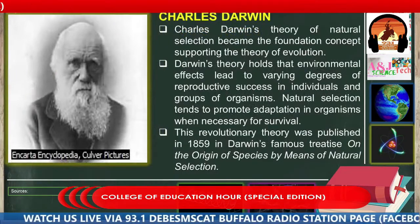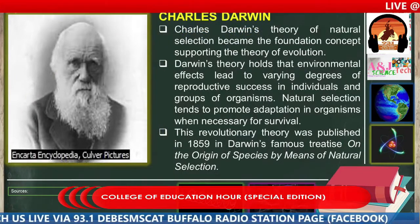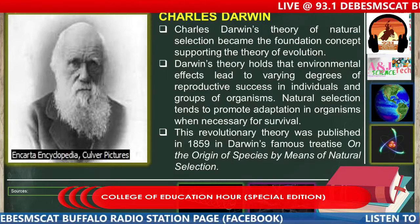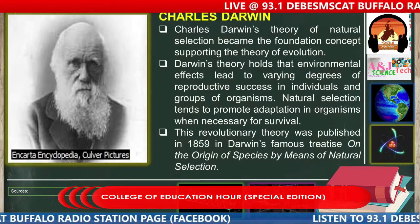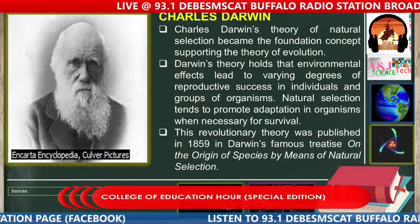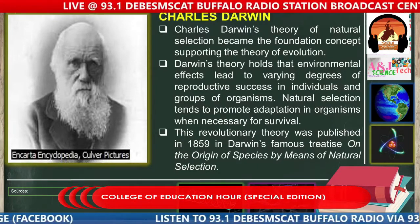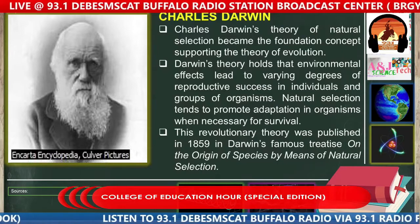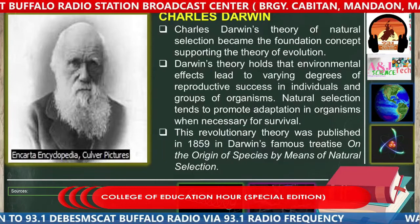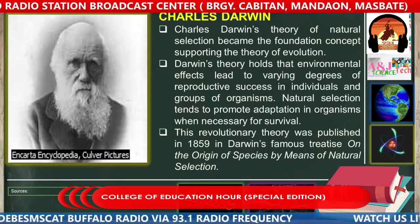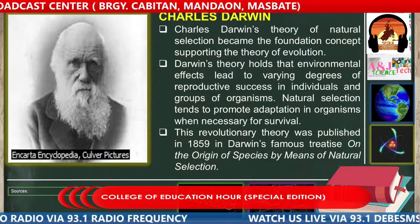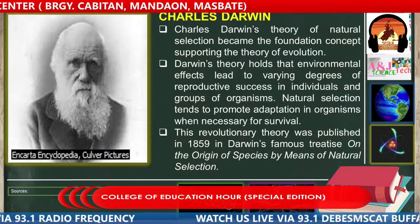Let's proceed with Charles Darwin. Charles Darwin's theory of natural selection became the foundation concept supporting the theory of evolution. Biologically speaking, the theory of evolution by means of natural selection is actually the foundation and backbone of biology. Darwin's theory holds that environmental effects led to varying degrees of reproductive success in individuals and groups of organisms.